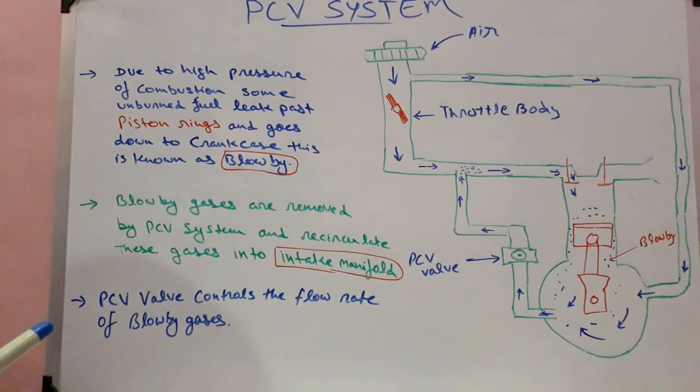The unburnt fuel will also dilute the lubrication oil, and the dilution of lubrication oil will lower the viscosity of the oil and will create lubrication problems. Also, the presence of blow-by gases increases the pressure inside the crankcase. It can break seals and can come out leaving a leakage in the crankcase.